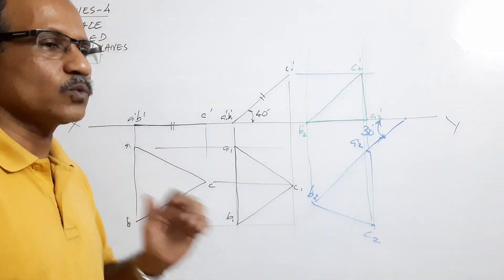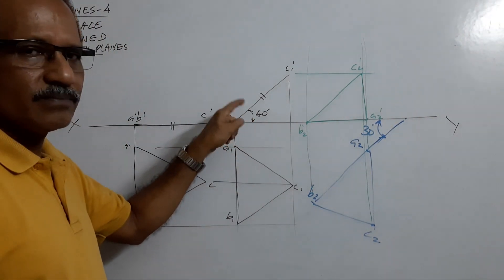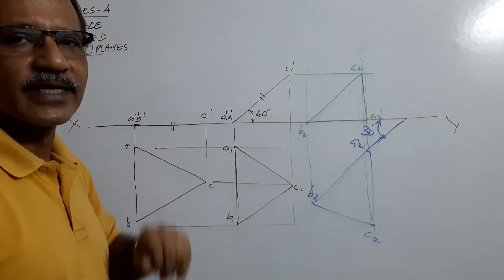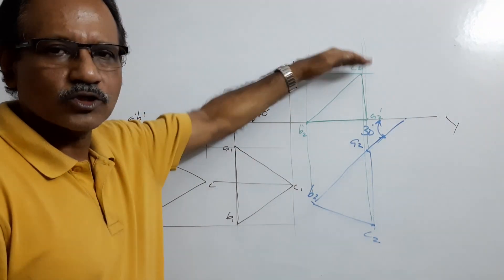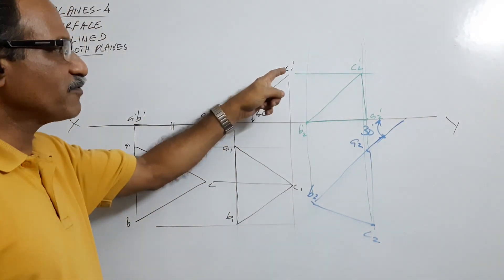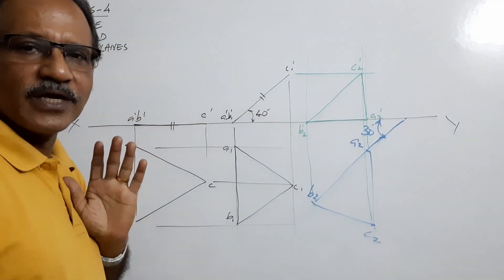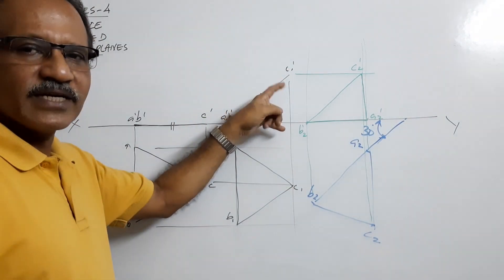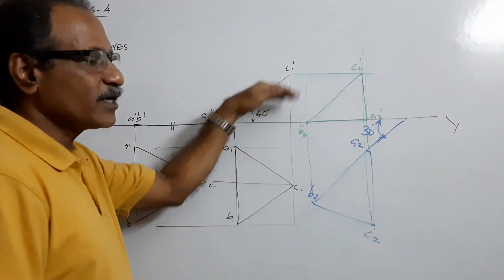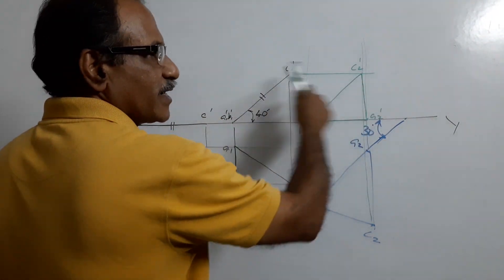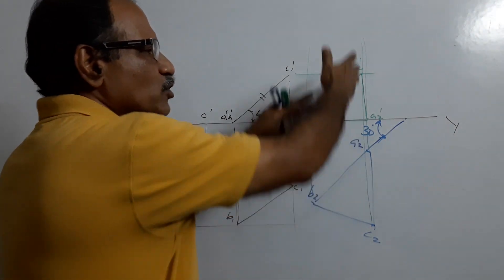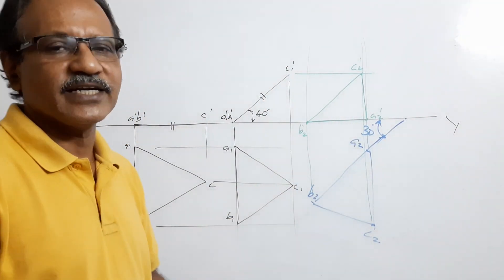Instead of giving the angle of inclination to HP, the question can fix the height of C from the ground. If the question says the lamina is resting on HP on one side with the corner C 35 mm above HP, instead of giving the angle, the constraint is point C being 35 mm above HP. Draw the same simple position elevation, draw a horizontal line 35 mm above the XY line, take the distance and cut on that line, then project a new plan. Redraw the plan and project the elevation to satisfy the required condition.